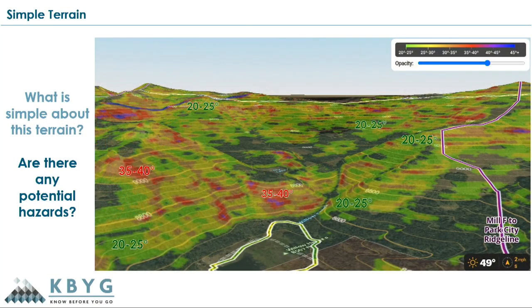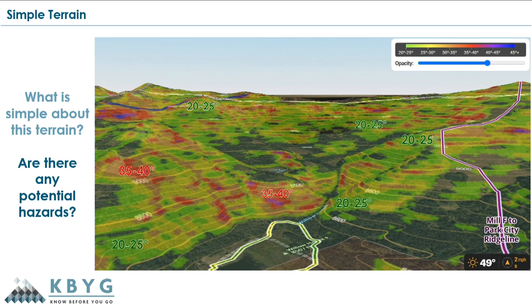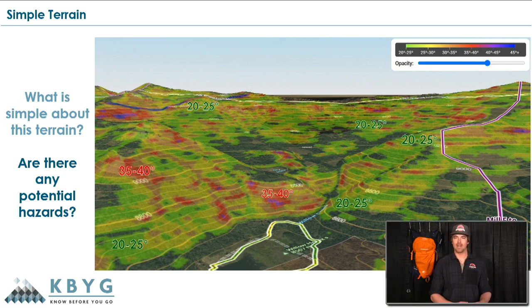Let's talk about different types of terrain. We have three types we like to discuss in avalanche classes: simple, challenging, and complex terrain. This is a great example of simple terrain up in Willow Fork in the Cottonwood Canyon area of Utah — tons of slope angles below 30 degrees, with slopes of 20 to 25 degrees. Maybe a piece that's 35 to 40 degrees, but it's in a very specific spot and we can avoid it when traveling through.